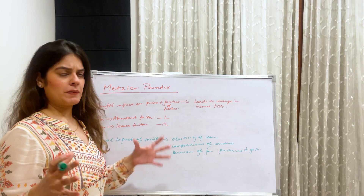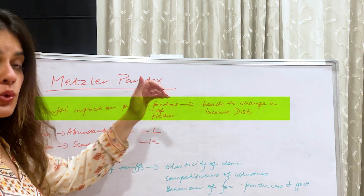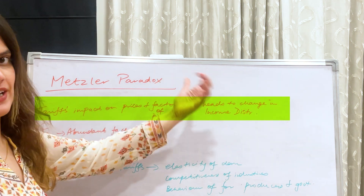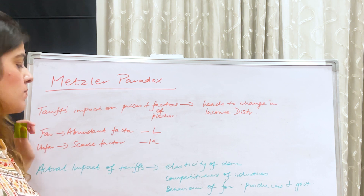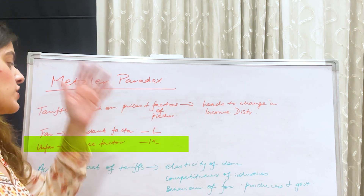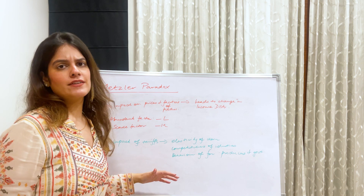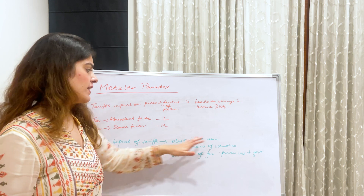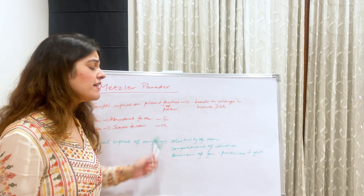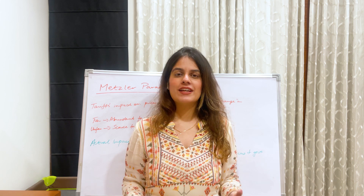To conclude: imposition of tariff impacts prices and factors of production, leading to a change in income distribution. It is more favorable to the abundant factor — in our case, labor — and unfavorable to the scarce factor, which is capital. This is what the Metzler Paradox says. However, the actual impact of tariff is not that straightforward; it depends on elasticity of demand, competitiveness of industries, and the behavior of foreign producers and governments in response to tariffs. I hope this video was useful — thank you for watching and I'll see you in the next video soon.